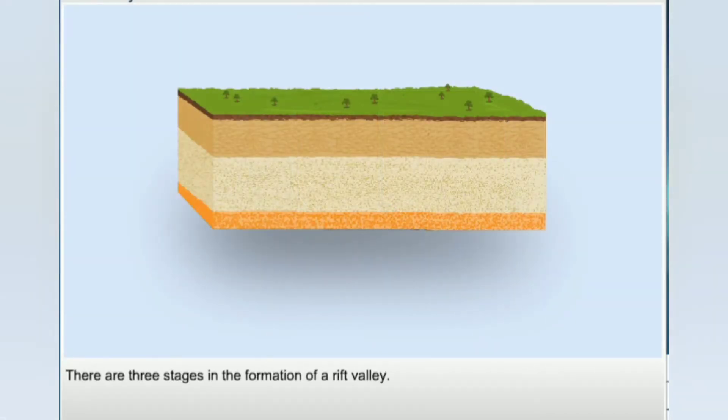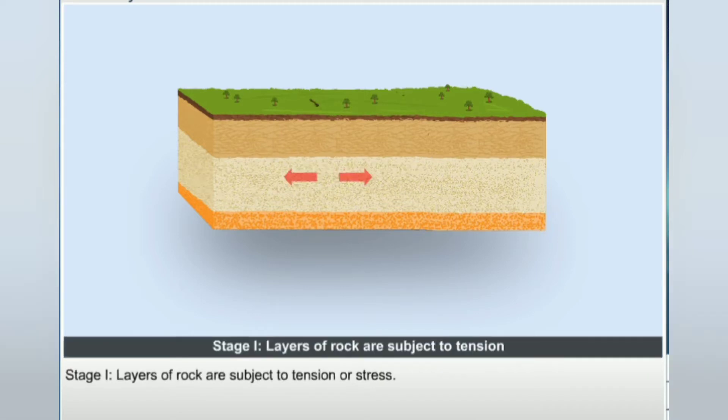There are three stages in the formation of a rift valley. Stage 1: Layers of rock are subject to tension or stress.